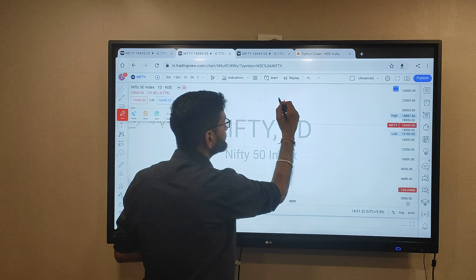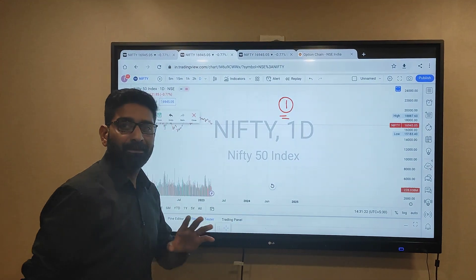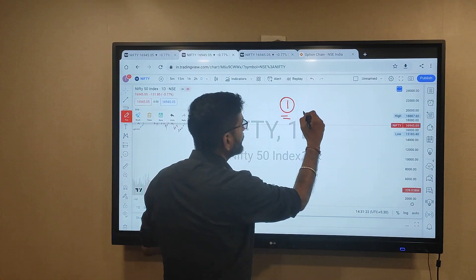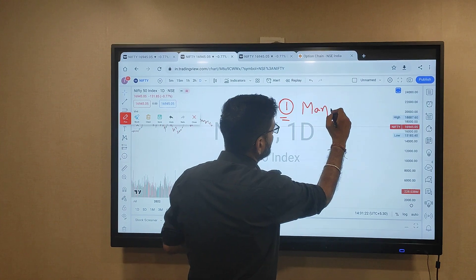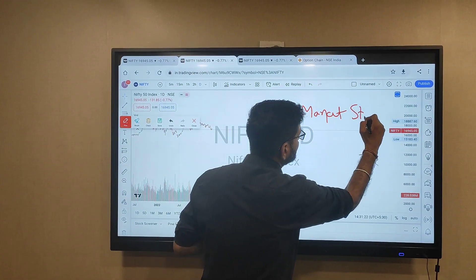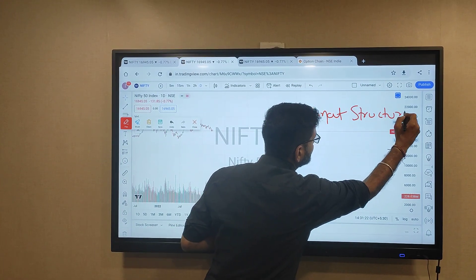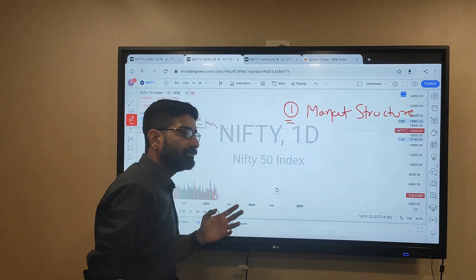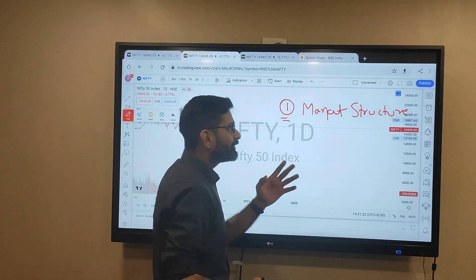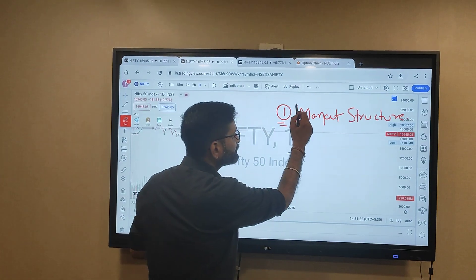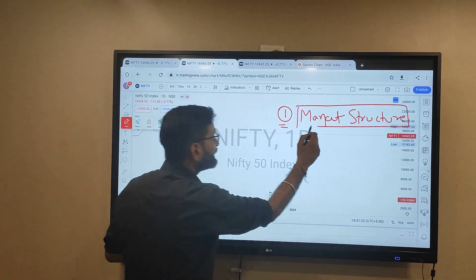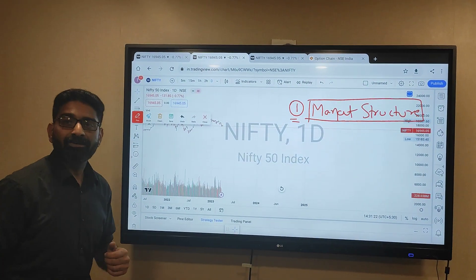The first is - the first step before taking a trade, what do we look at? What is the market structure? May be index, may be option, may be any stock, equity, whatever you are trading. But the most important part is structure of the market.